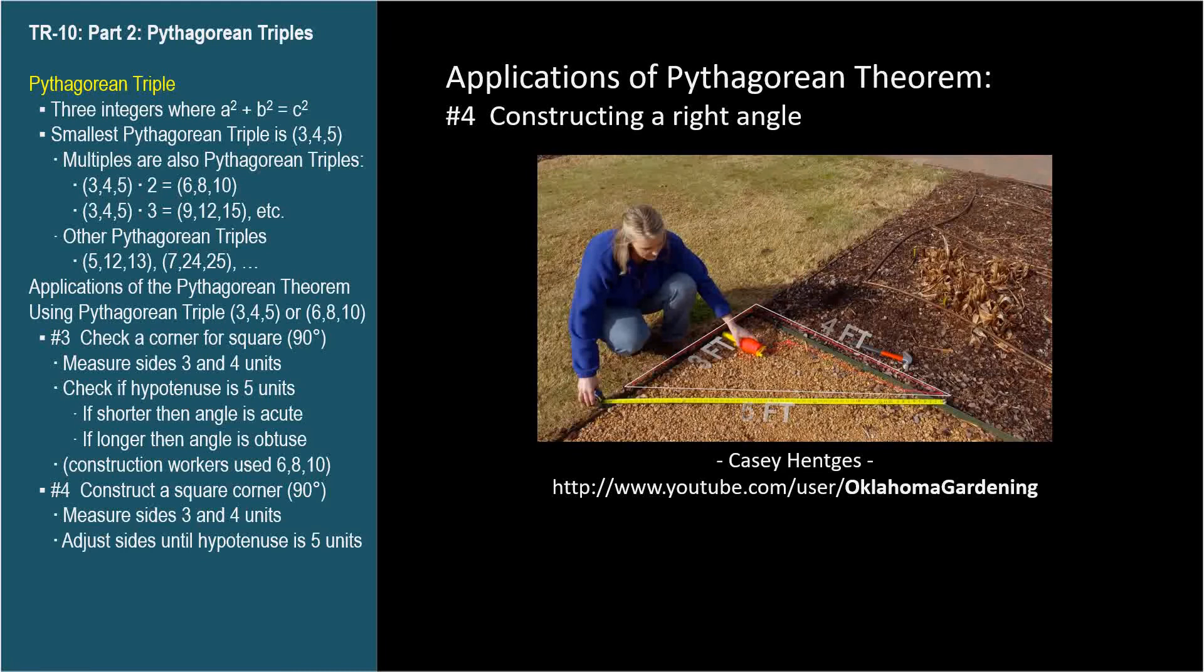Adjusting the angle between the three and four sides until the hypotenuse is five will result in a right angle. She even uses the word hypotenuse.